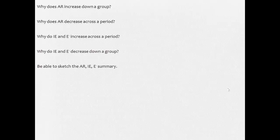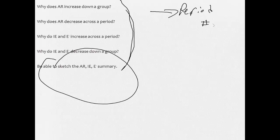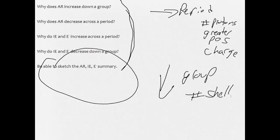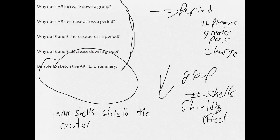That brings us to question time. So here we're getting into the whys. You need to be able to sketch that summary. But remember the whys: when we deal with across a period, the answer is going to be related to the number of protons, which is going to be a greater positive charge. When we go down in a group, the answer will be related to the number of shells or our shielding effect, where the inner shells shield the outer electrons from the pull of the nucleus.